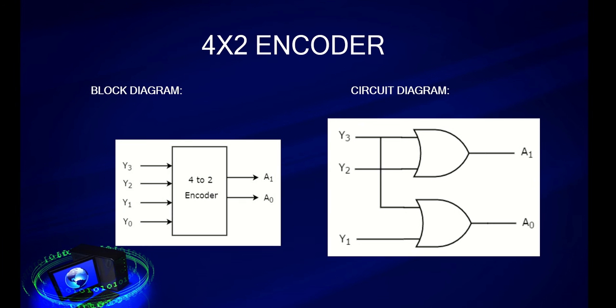4 into 2 encoder, the block diagram has been given here. And it has 4 input lines and 2 output lines. The circuit diagram has been given here. We use OR gate for the circuit diagram.